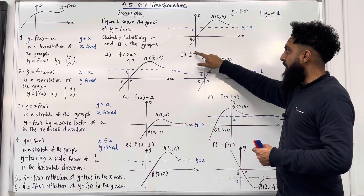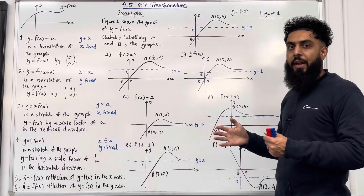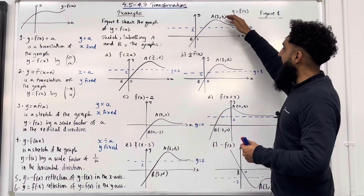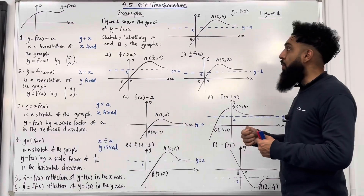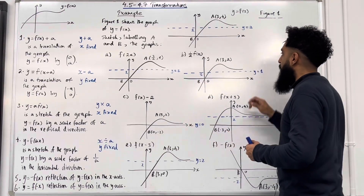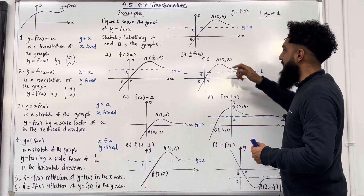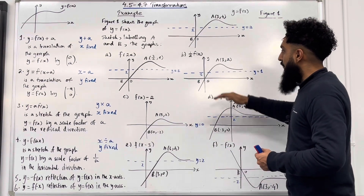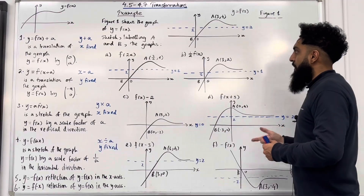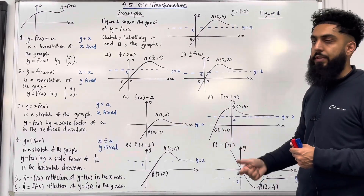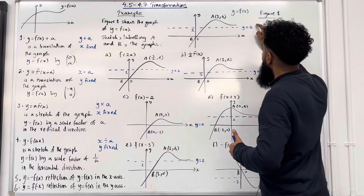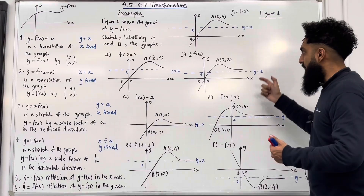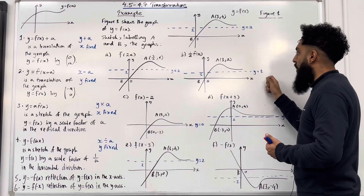Part b: a half of f of x. You take the y coordinates, you multiply by a half, keeping the x-coordinates fixed. So my new coordinate a will become (3, 2) — we've taken the y-coordinate 4, multiplied by a half to get 2, keeping x fixed at 3. My coordinate b still remains at the origin. The asymptote will get affected because this transformation is affecting the y-coordinates. Initially we had an asymptote of y equal 2; 2 times a half is 1, so the new asymptote is at y equal 1.